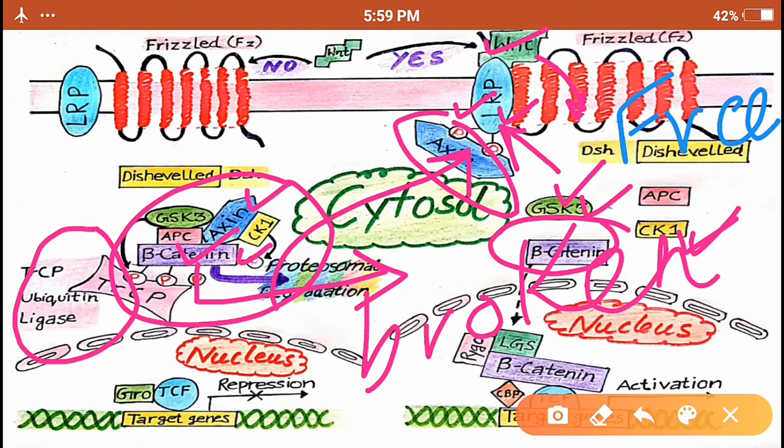If it is free, it can go into the nucleus and along with other transcriptional factors like LGS, PIGO and CBP and this TCF, they bind to the target genes here and activate the transcription of the genes. Thank you very much.